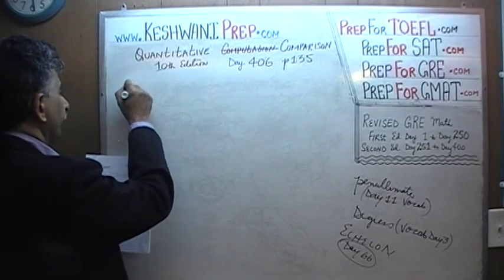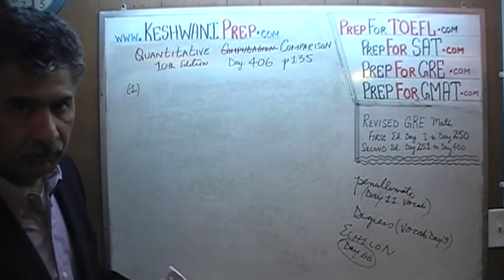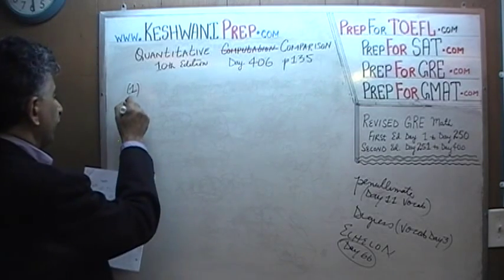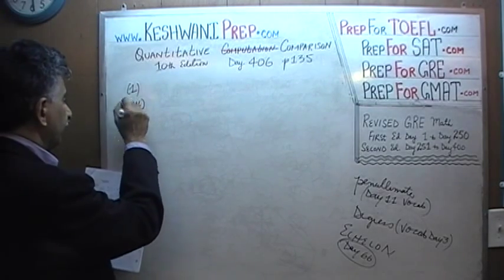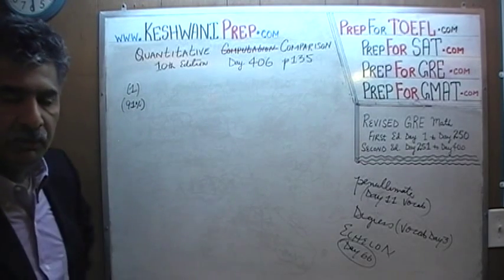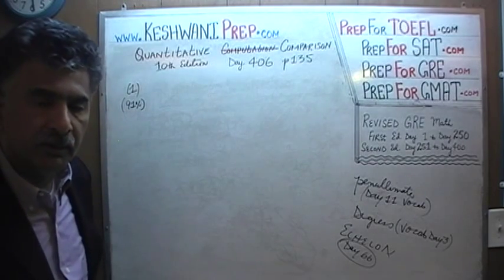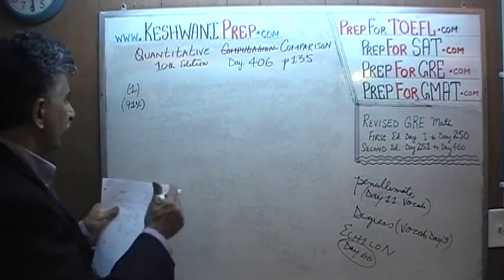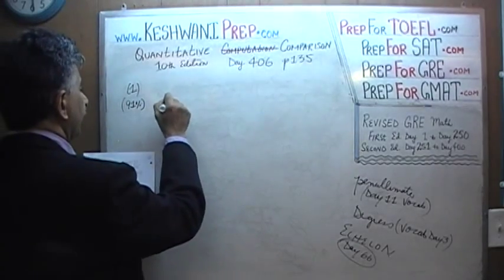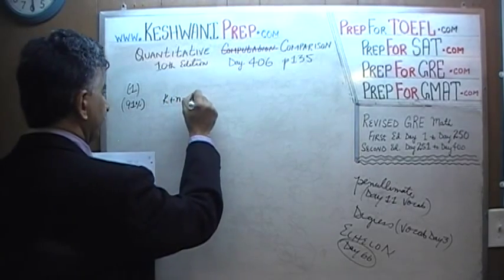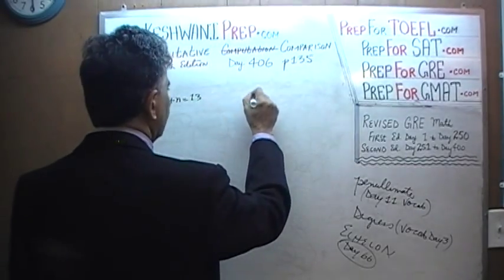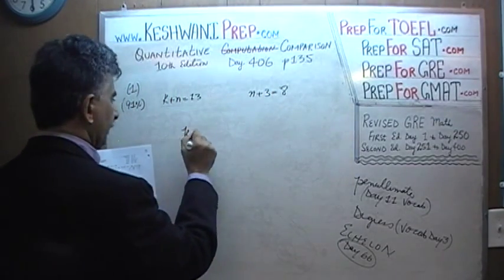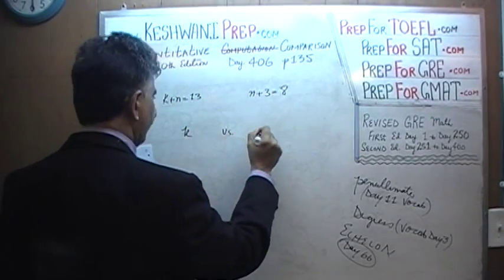Problem number 1 is a very straightforward, simple problem. On a scale of 1 through 15, this is number 1 — very easy. As a matter of fact, 91% of people who took the exam, when it was first given, had no trouble with this problem at all. They got it right. Here is what it says: we are told that k plus n equals 13, and also that n plus 3 equals 8. We are being asked to compare k versus n.